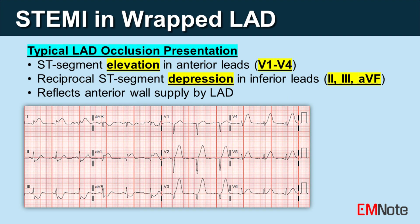Typical presentation of LAD occlusion: Normally, occlusion of the LAD results in ST-segment elevation in the anterior leads (V1 to V4) and reciprocal ST-segment depression in the inferior leads (leads 2, 3, AVF) on an ECG, due to the anterior wall being primarily supplied by the LAD.